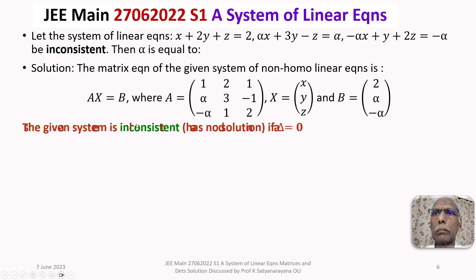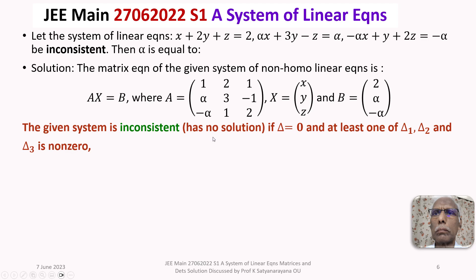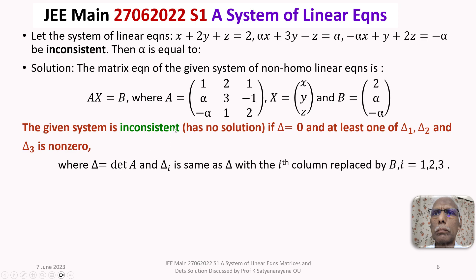The given system is inconsistent — meaning it has no solution — if delta is equal to 0 and at least one of delta 1, delta 2, and delta 3 is non-zero. Here delta is the determinant of the coefficient matrix A, and delta i is delta with the i-th column replaced by capital B, for i equal to 1, 2, 3.